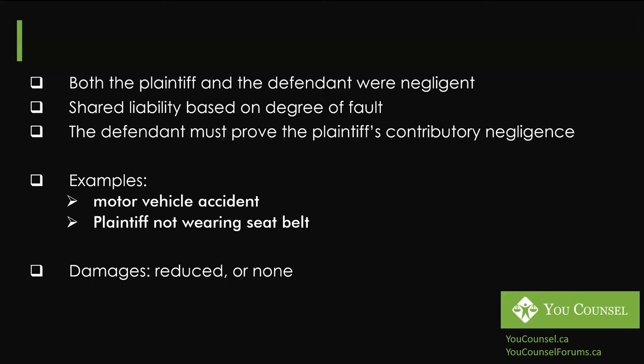When contributory negligence is established, the court may find the defendant completely off the hook and award no damages, or it may apportion damages. For example, if the plaintiff is found 25% liable, the court reduces the damages by 25%. No money goes from the plaintiff to the defendant — rather, if total damages were $100,000 and the plaintiff is 25% liable for contributory negligence, the plaintiff receives $75,000.